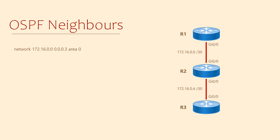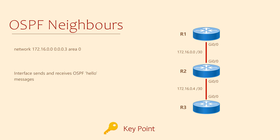Now back to OSPF neighbors. By entering the network command, we told the router to enable OSPF on any interface that matches the network and wildcard mask, and put them into area 0. There was one interface that matched on router R1, causing two things to happen: the router started sending hello messages — often using multicast — on interface Gig 0/0, and it also starts processing any hello messages it receives. These hello messages enable the two routers to find each other and become neighbors. The network command also advertises this interface's network, enabling other OSPF routers to learn about it.